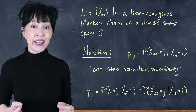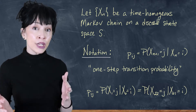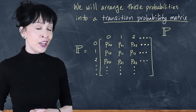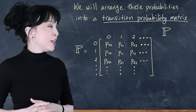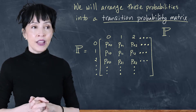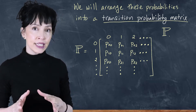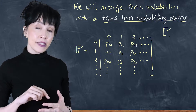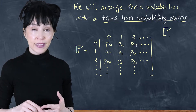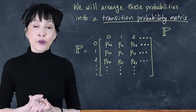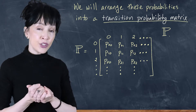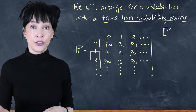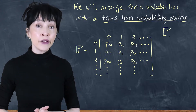We are going to arrange these p_ij transition probabilities into a big matrix known as a transition probability matrix, or sometimes a probability transition matrix. We denote it with a bold double-lined P. It's going to be a square matrix where the number of rows and columns equals the size of the state space — a row for everything in the state space and a column for everything in the state space. For this example, I'm assuming the state space is the non-negative integers 0, 1, 2, and so on. These are not time steps; these are values the chain can take on.